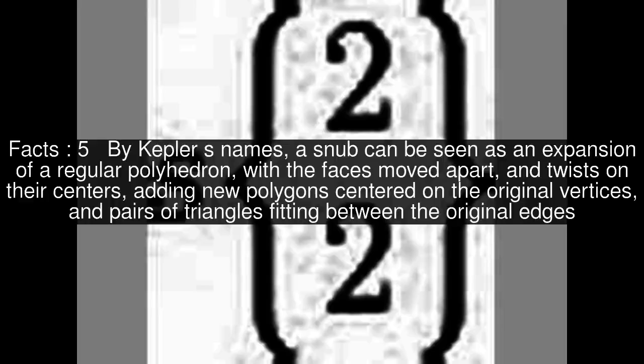By Kepler's names, a snub can be seen as an expansion of a regular polyhedron, with the faces moved apart and twists on their centers, adding new polygons centered on the original vertices, and pairs of triangles fitting between the original edges.